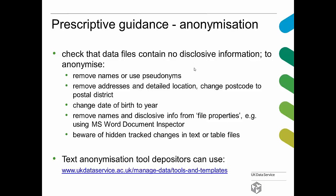The guidance is prescriptive to make it easier for researchers to follow: remove names, remove addresses, change the date of birth to a year, remove information that's in the file properties, etc. These are all instructions that people can follow. Check hidden track changes in text files. It's important to note that a lot of the data collections we receive in the ReShare repository are often qualitative data collections — transcripts of interviews, recordings of interviews, transcripts of focus group discussions, etc. We also have a text anonymization tool that can help depositors check for disclosive information that might be in textual transcripts.